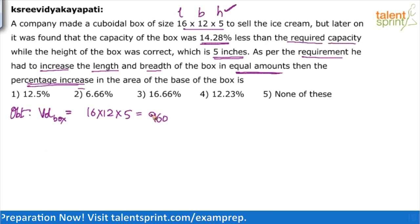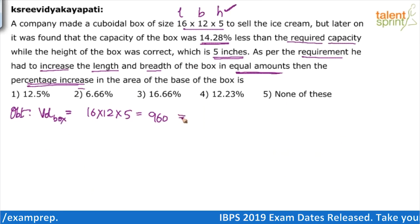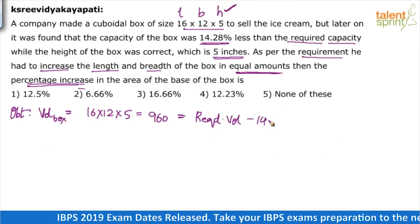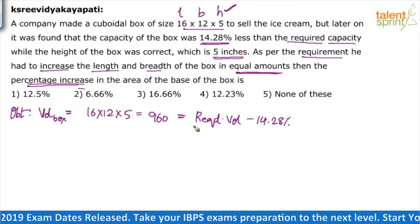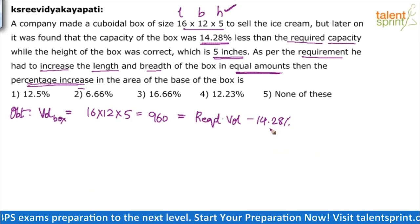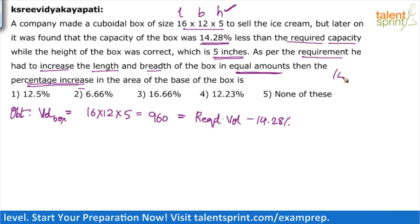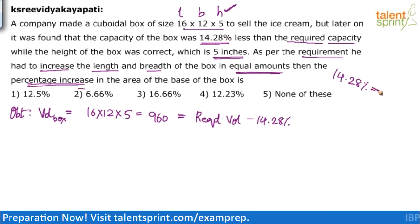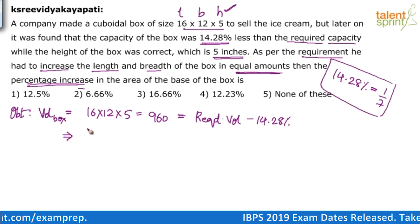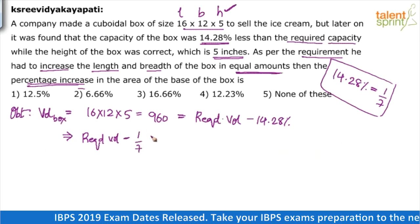This means the obtained volume equals the required volume minus 14.28% of the required volume. Now, 14.28% is equivalent to 1/7 — you must know these conversions. Dealing with fractions is easier here. So we can say: required volume minus 1/7 of required volume equals 960.